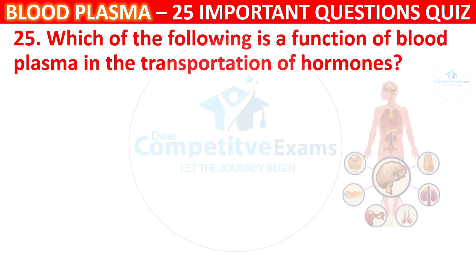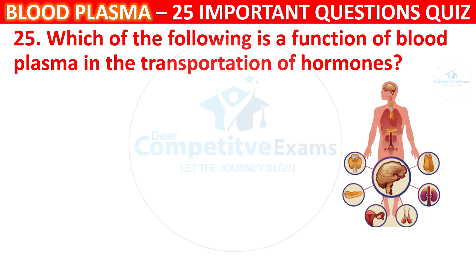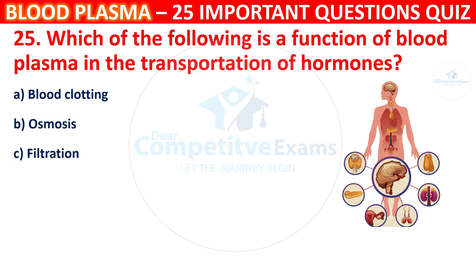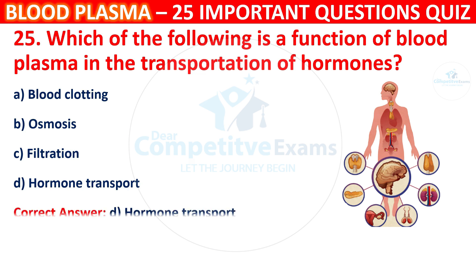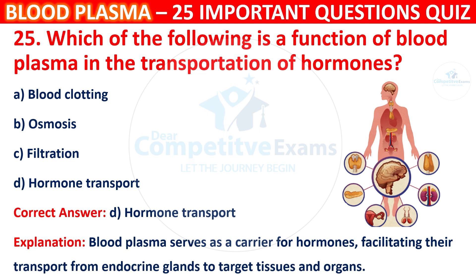Question 25: Which of the following is the function of blood plasma in the transportation of hormones? Your options are Blood clotting, Osmosis, Filtration, or Hormone transport. The correct answer is D, i.e. Hormone transport. Blood plasma serves as a carrier for hormones, facilitating their transport from endocrine glands to target tissues and organs.